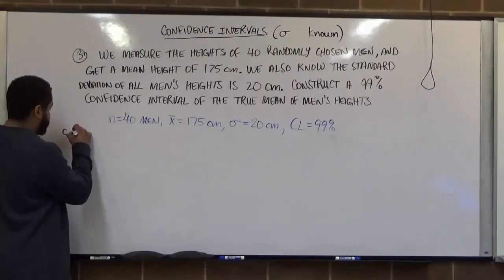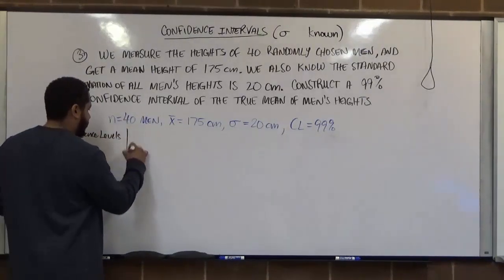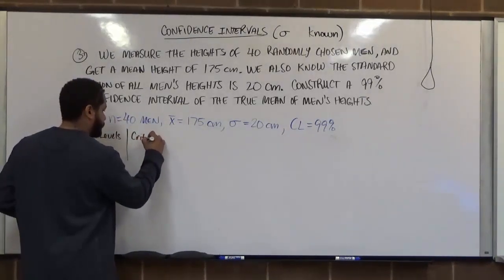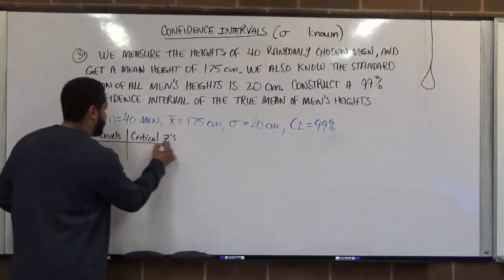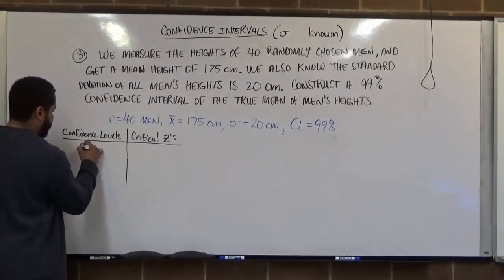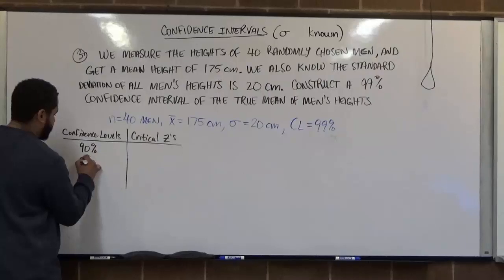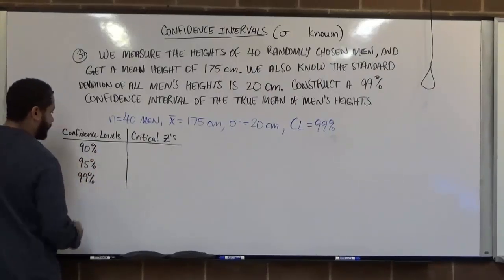So confidence levels and critical z's. Our critical z values are the critical values generated by the confidence levels. And we have three confidence levels: 90%, 95%, and 99%.